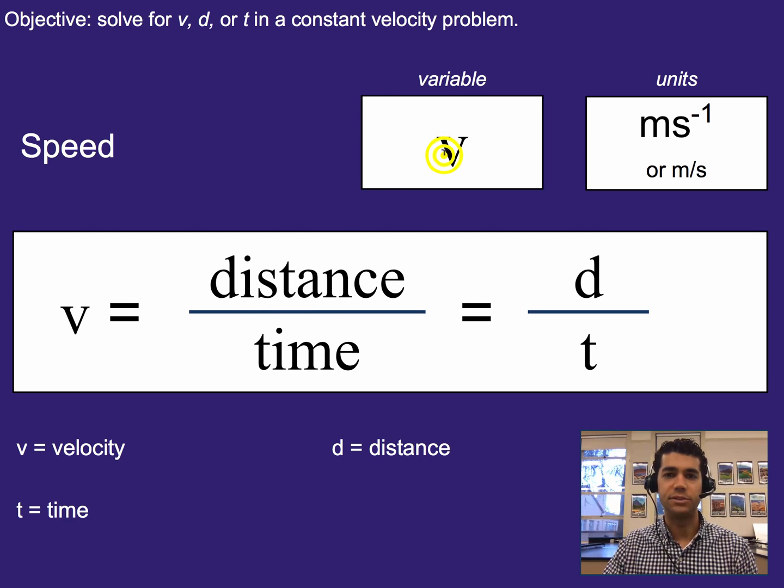For speed, we use the variable v. The units are going to be in meters per second. That's because we usually measure our distances in meters and our time in seconds. Now, you can report speed out in a different set of units, but this will be the most common one we use in physics, and that's the one that we recommend you always convert to to begin with.